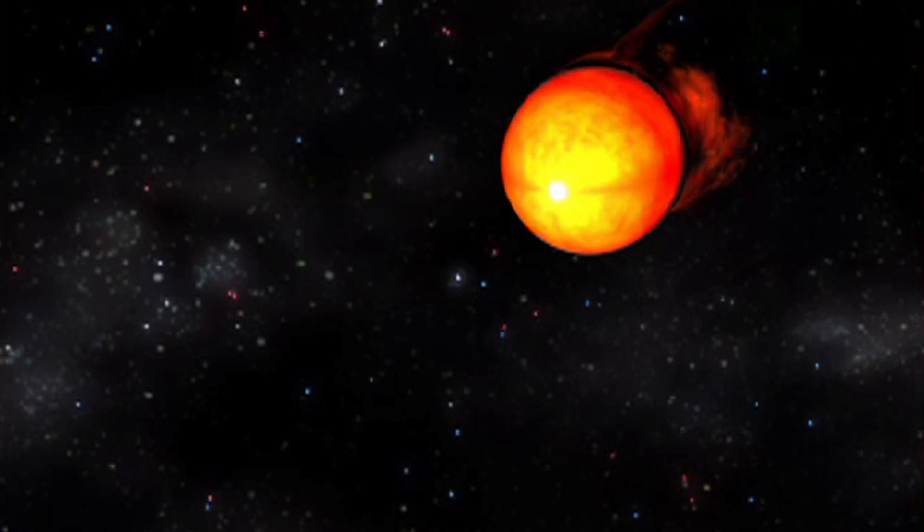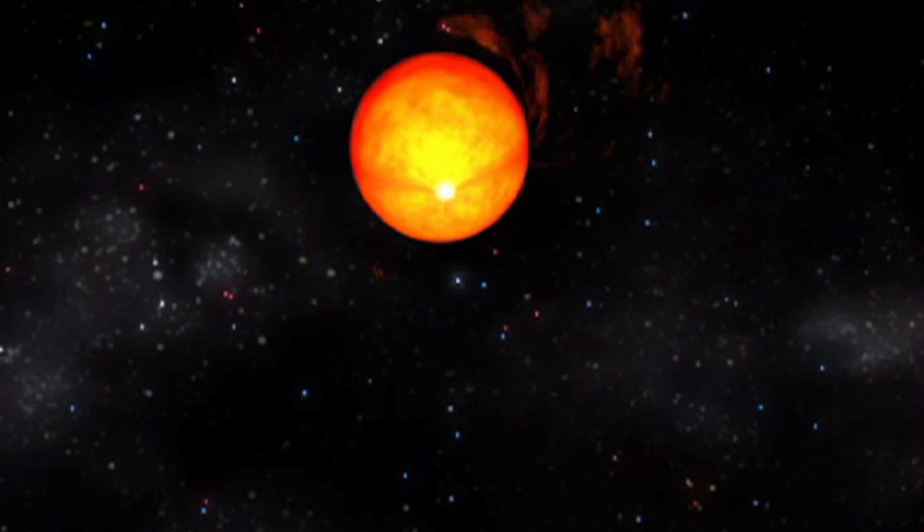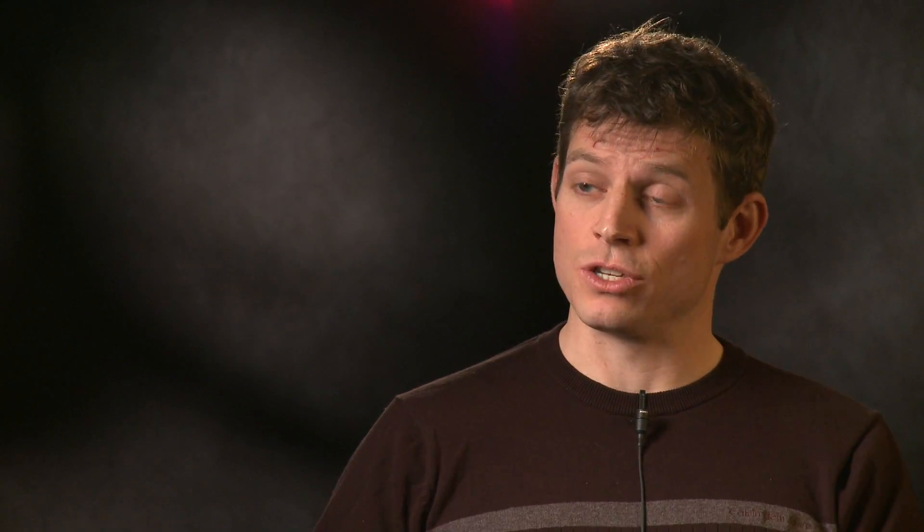But what happens is if that neutron star has a companion star, a star like our sun for instance, eventually that star will continue to evolve. It burns fuel inside with nuclear fusion. As it turns into a red giant...